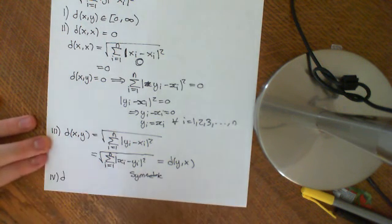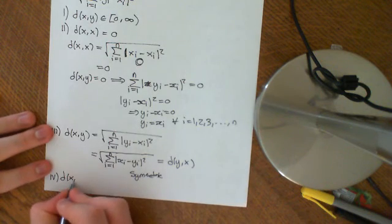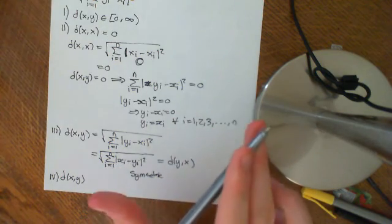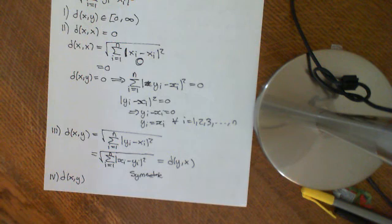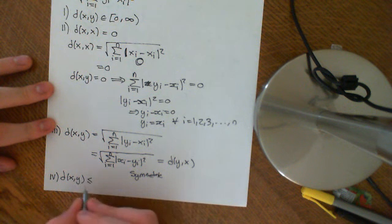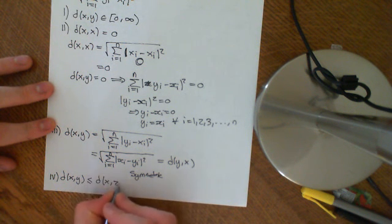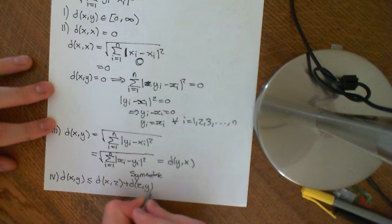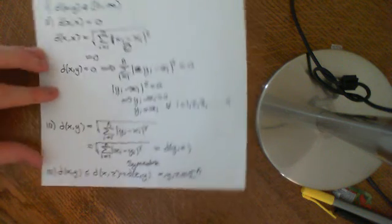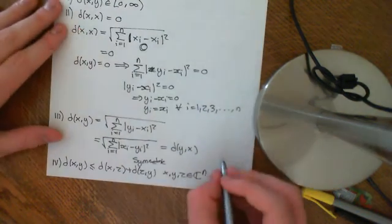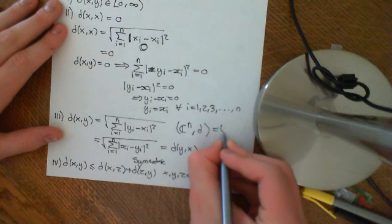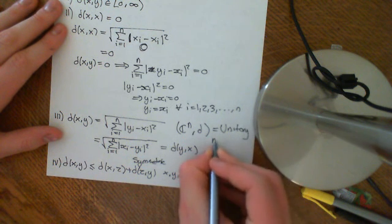For the fourth property I'm going to wave my hands again. Minkowski did show that this obeys the triangle inequality, and we will see that later. The distance between X and Y is indeed less than or equal to D(X, Z) + D(Z, Y), where X, Y, and Z are all elements of this set of N-tuples of complex numbers. So C^N with this metric obeys the axioms of a metric space, and is known as unitary N-space.